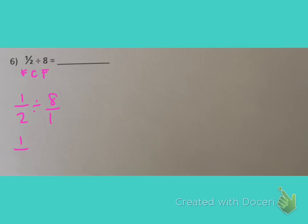So then we can do keep change flip. We'll keep the first fraction. It'll stay 1 half. Change the division sign to a multiplication symbol. And then we will flip 1 eighth upside down. And now our division problem has become a multiplication problem which we know how to solve.